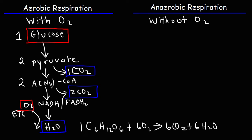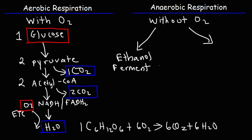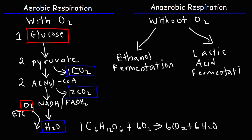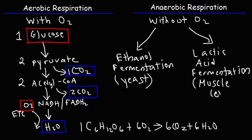In anaerobic respiration — that is, without oxygen — there are two common pathways you need to be familiar with. The first is ethanol fermentation, which occurs when yeast have access to glucose but do not have access to O2. The other is lactic acid fermentation, which occurs in your muscle cells. Ethanol fermentation typically occurs with fungi such as yeast.